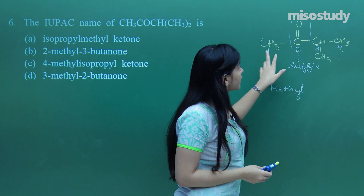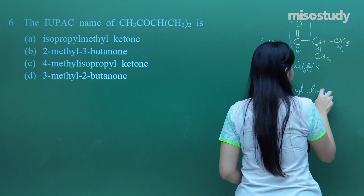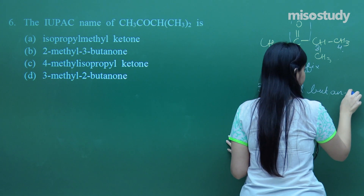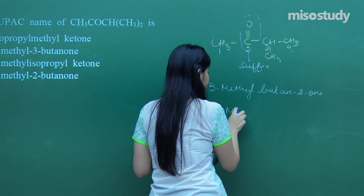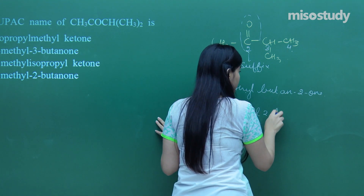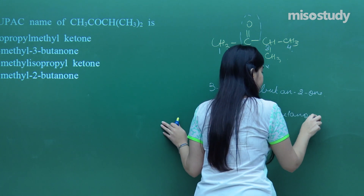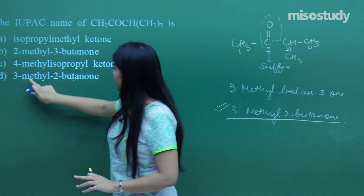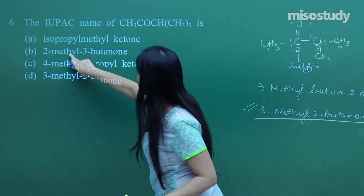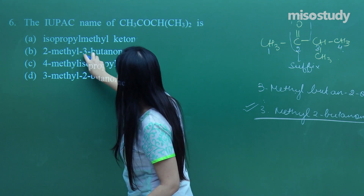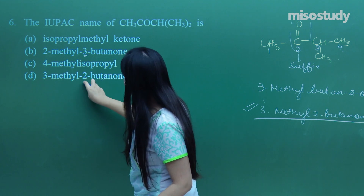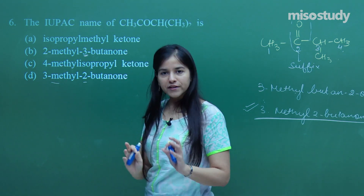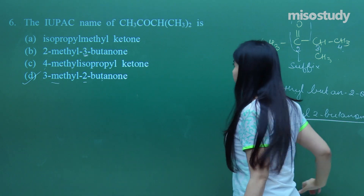So 3-methyl — it would be butan-2-one, or I can say butane-2-one, or 3-methyl-2-butanone. Can you find the resembling option? 3-methyl-2-butanone — yes, definitely. It will not be 2-methyl-3-butanone because I need the lowest possible number for the functional group. So that is our perfect answer. I hope everybody has got the answer.